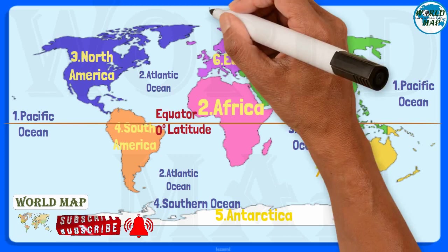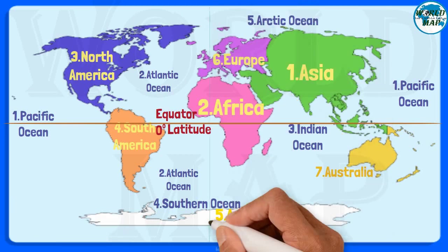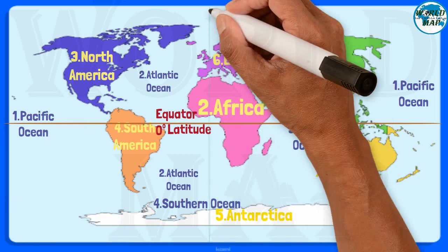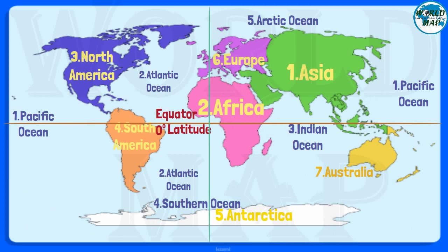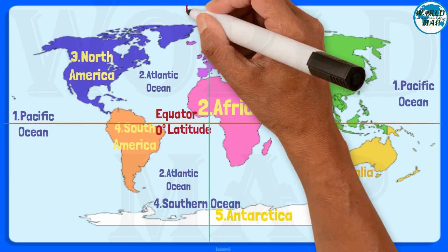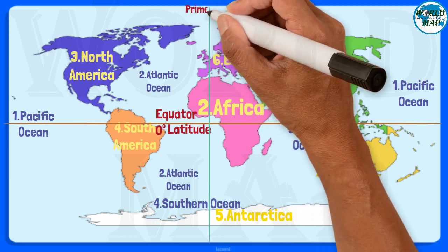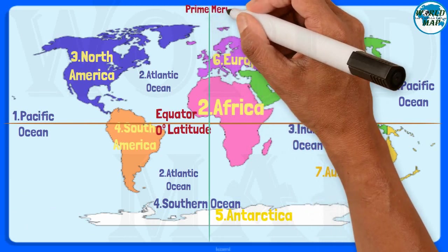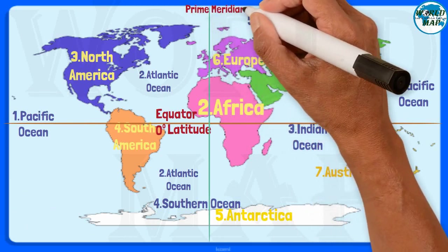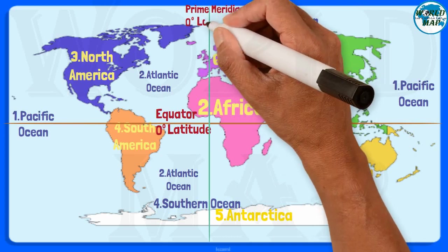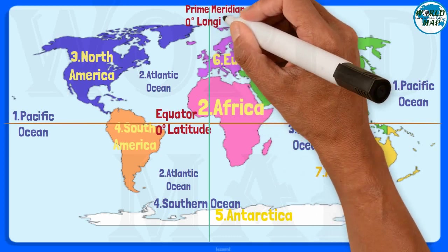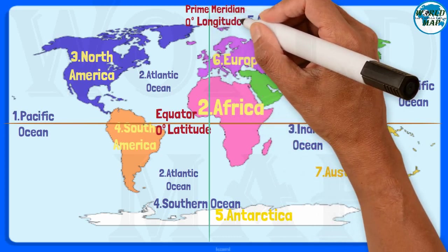Prime Meridian. The prime meridian is the line of zero degrees longitude, the starting point for measuring distance both east and west around Earth.